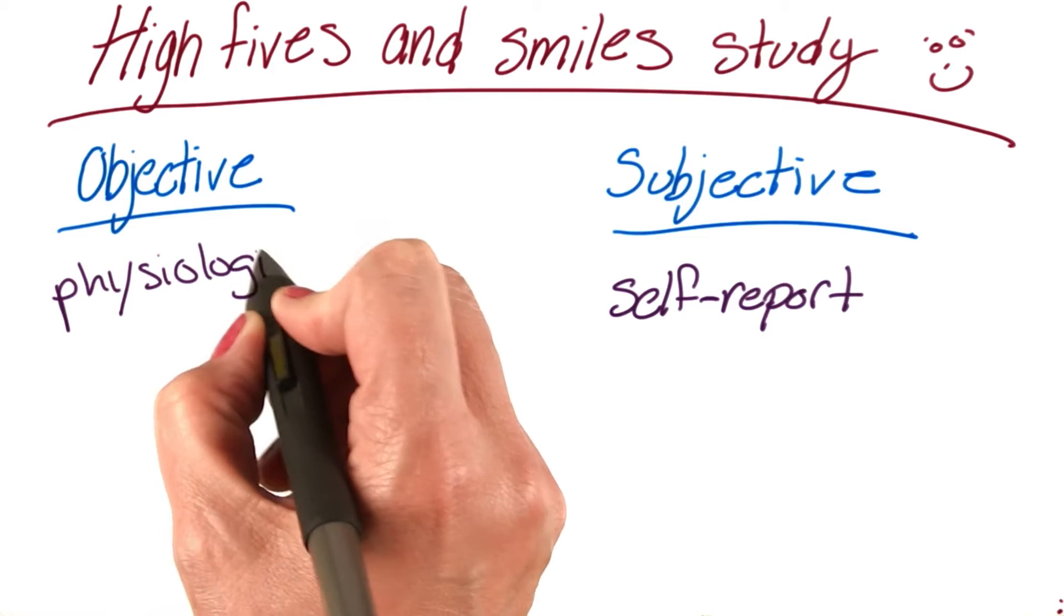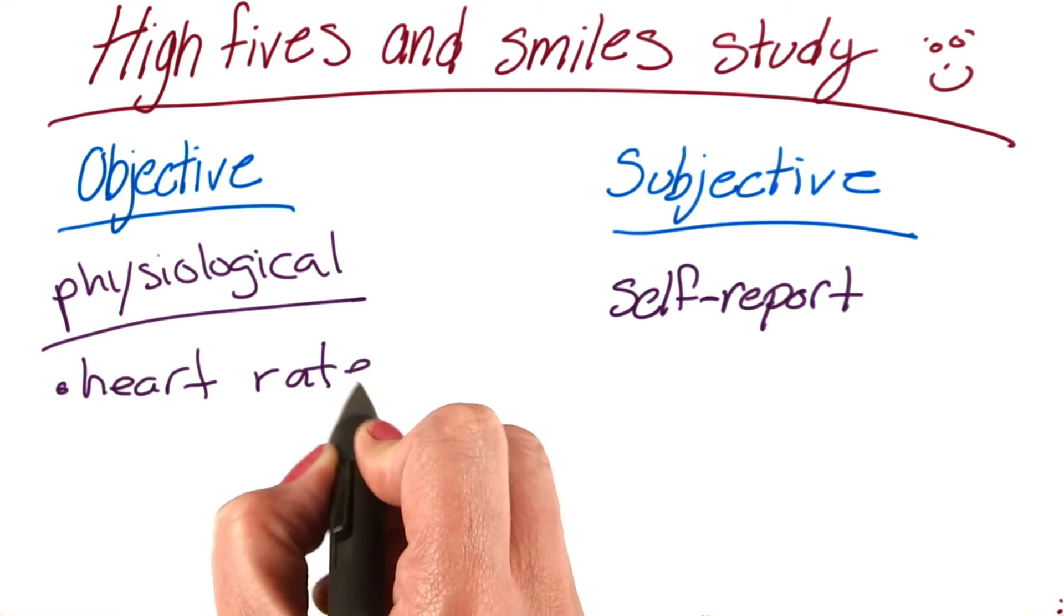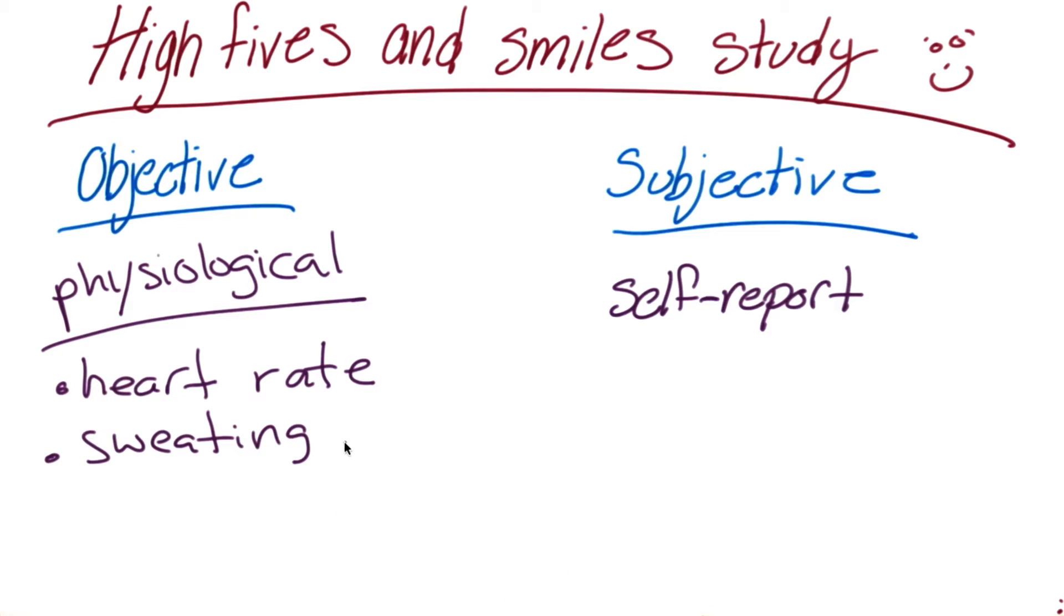Another type of objective measure is a physiological response. Heart rate is one example of a physiological response. Sweating is another physiological measure. Physiological measures are also objective because we can quantify those responses.